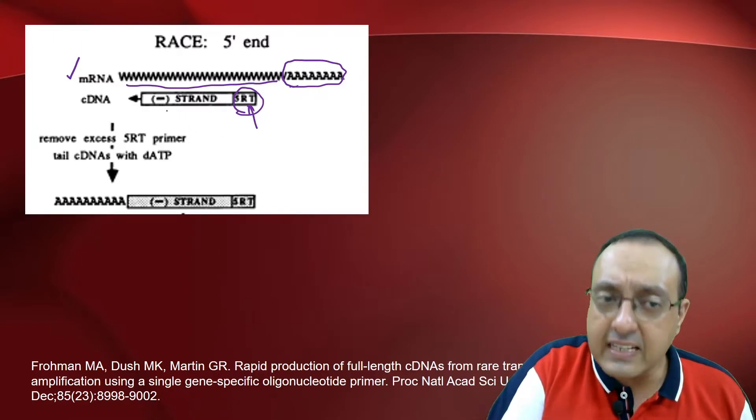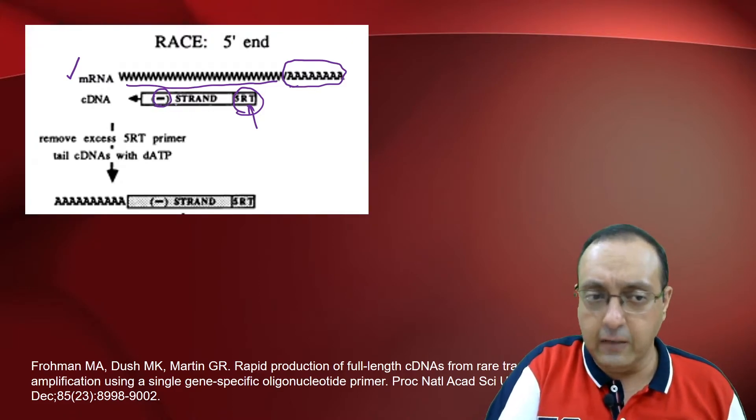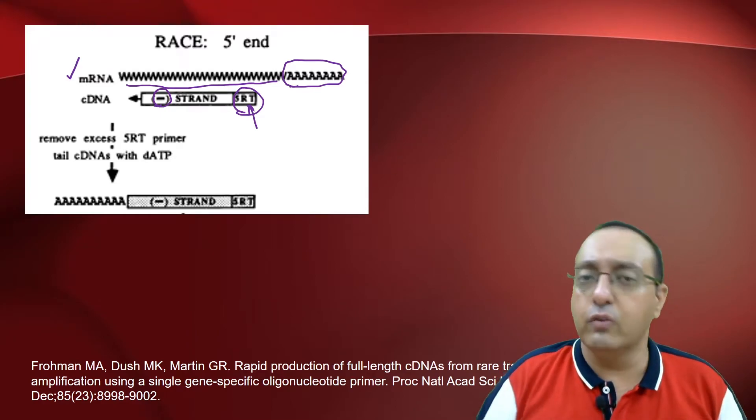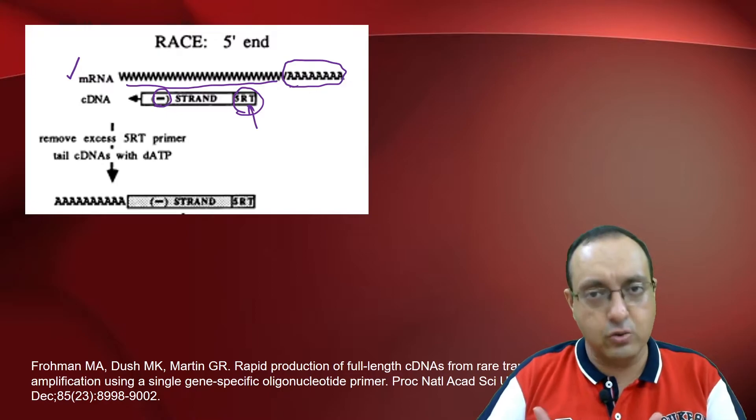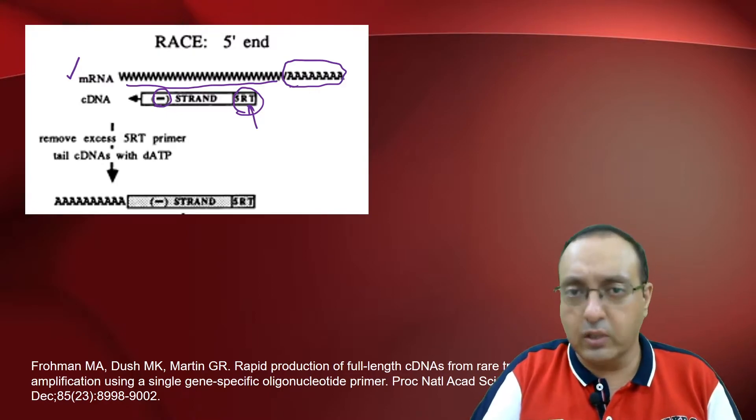Now what you will do is you will synthesize the cDNA. This will be synthesizing the negative strand of the cDNA. And after cDNA synthesis is done, you will remove excess primer. So you have cDNA hybridized to your mRNA. You will digest the RNA so that it is gone.